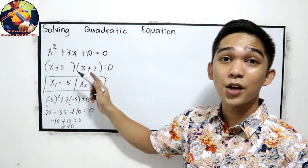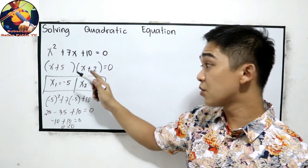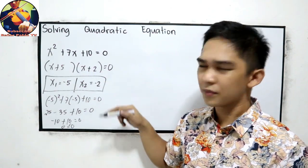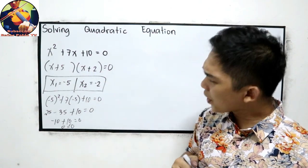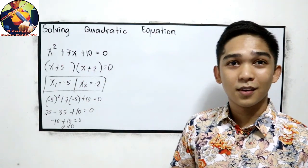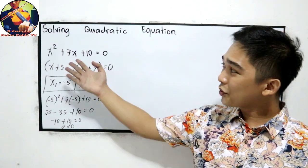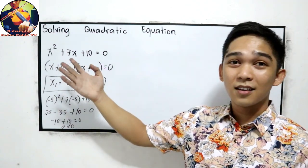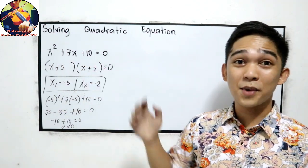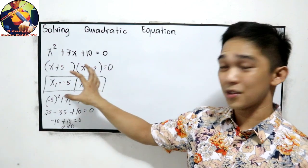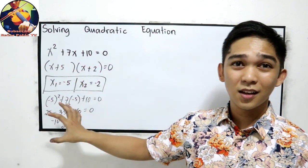You can also apply the check using negative 2. Factoring x squared plus bx plus c equals 0 is the recommended method to use here.